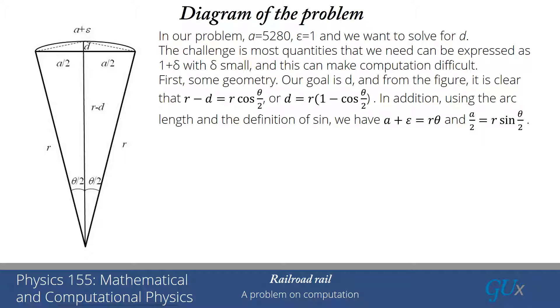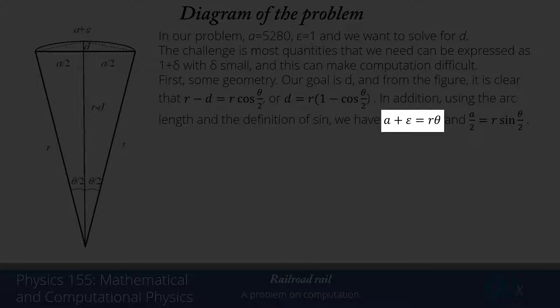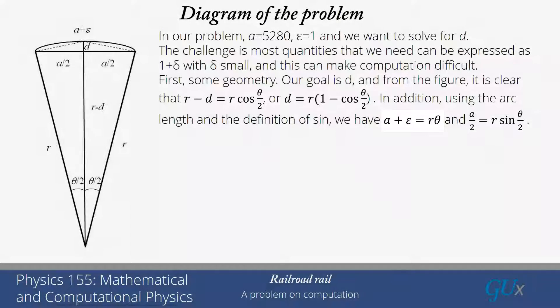Let's focus on two other quantities we can determine. The arc length, the length of the piece of the circle that's subtended by that chord, that's just equal to the radius times the angle that subtends that arc, as if that angle is written in radians. So we have the length, A plus epsilon, equals R times theta. The second equation is A over 2 equals R sine theta over 2.